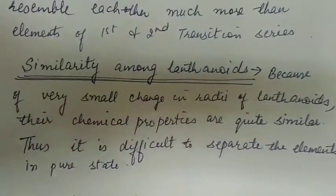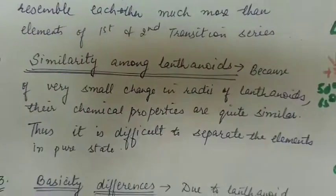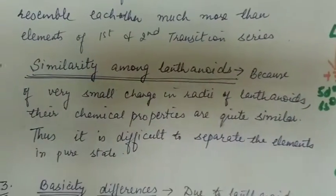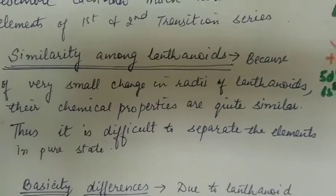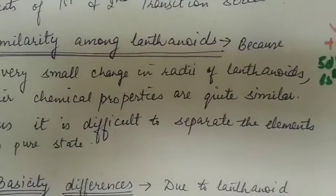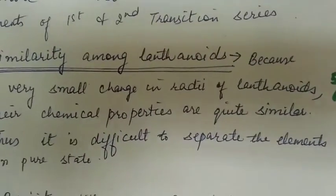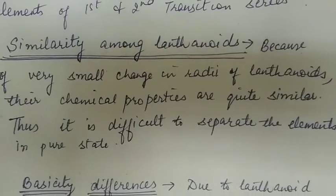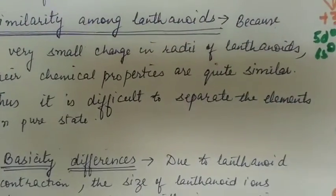Next consequence: similarity among lanthanoids. Their radius decreases but it is very small - almost similar radius results in similar chemical properties, and it is difficult to separate them.